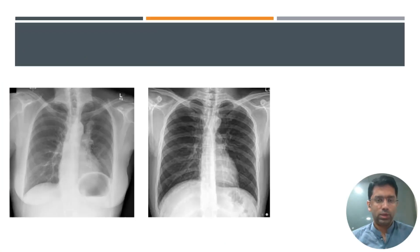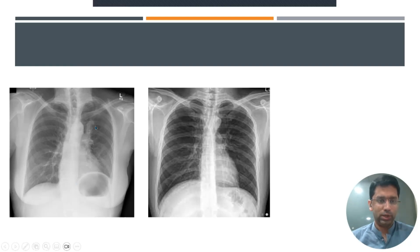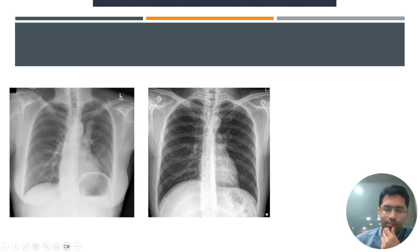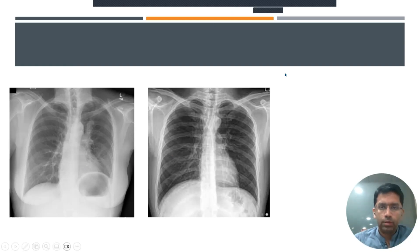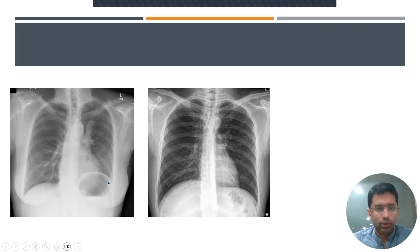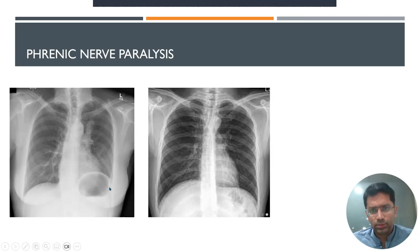Going back to the X-ray, when you compare it with a normal X-ray, you can see that the left diaphragm is raised and the left hilum is more prominent. This is due to phrenic nerve paralysis.